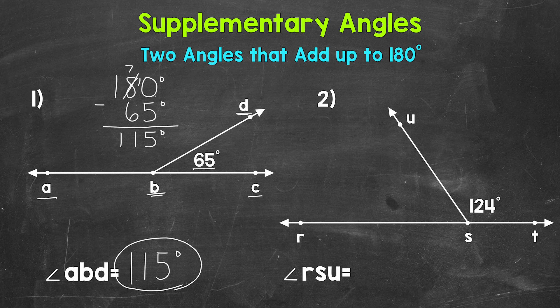We can always double check our work and make sure that that angle measure is correct. And we do this by adding 115 degrees plus the 65 degrees and make sure they equal 180. We'll start with 5 plus 5, which is 10. We'll put our 0 here, carry the 1.